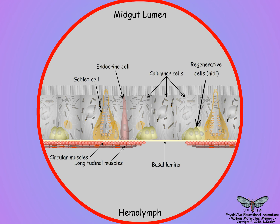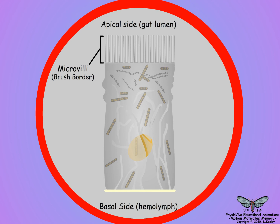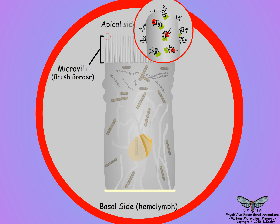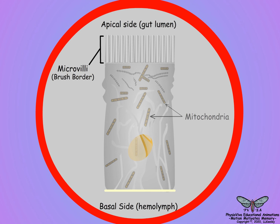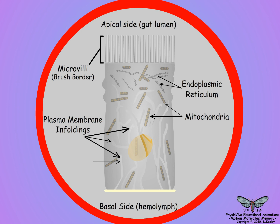Let us look at the features and functions of each cell type. Columnar cells are the most abundant cell type and form a microvillar brush border on the apical side of the cell, facing into the lumen of the midgut. The microvilli greatly increase the surface area for digestive enzyme secretion and absorption of digested nutrients. The surface of microvilli are coated with a viscous secretion of glycoproteins and lipids, called the glycocalyx, that can entrap and concentrate secreted enzymes and digestive products. Columnar cells have mitochondria and endoplasmic reticulum on the apical side for the synthesis and secretion of digestive enzymes.